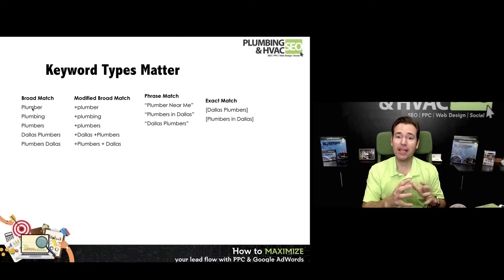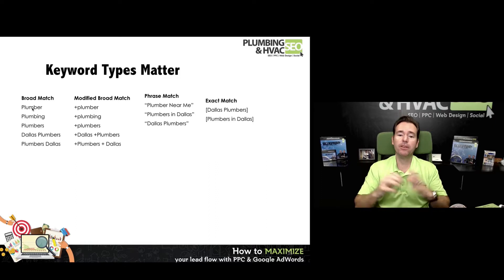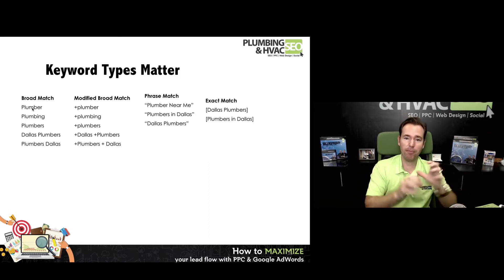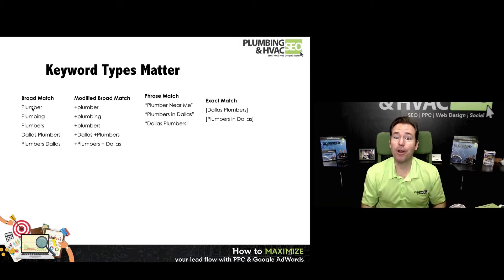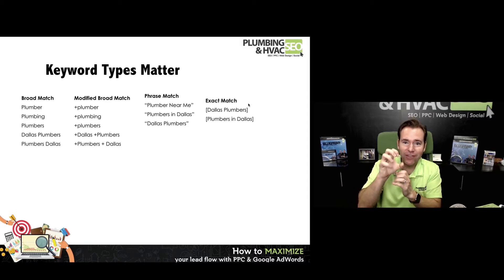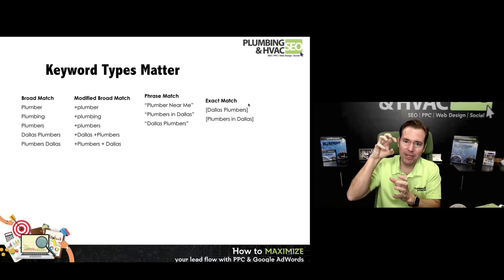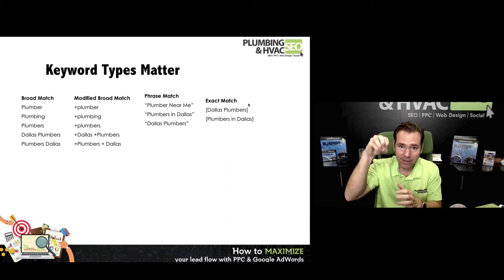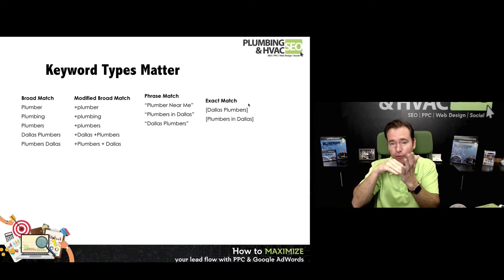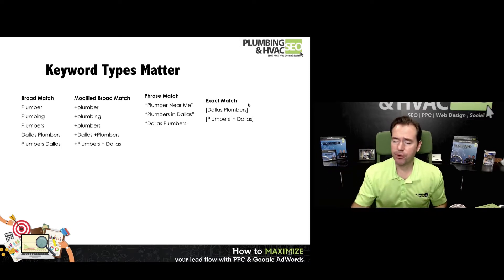Modified broad match is okay in a lot of cases. Basically what you're saying with modified broad match is plus the word, plus plumber — give me anything that has plumber in it. So that can open up a lot of different things. What we find is phrase match and exact match work really well. As you run the campaign and optimize it, you find exact phrases getting lots of search volume and clicks, then you set up exact match ad groups and phrase match for those terms so you can write an even more specific text ad and generate even better results.